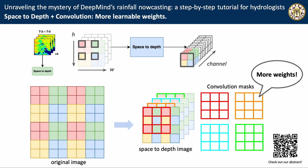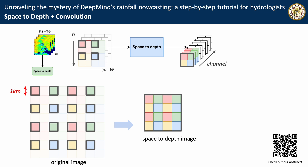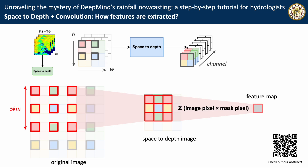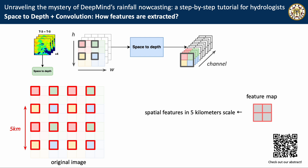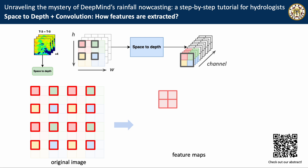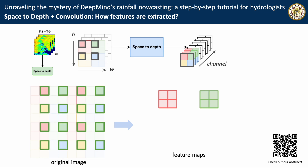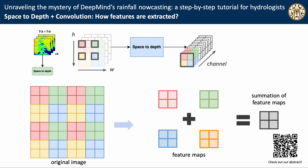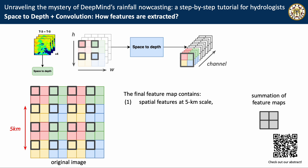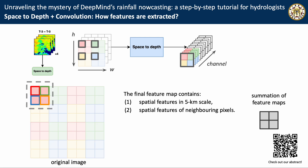Another advantage relates to spatial resolution. When doing convolution on a space-to-depth image, we are actually extracting sparse spatial features at a scale of 5. Repeating this step, we get a map with spatial features at scale 5. The same operation is replicated on every channel of the space-to-depth image, and then we get more feature maps. Summing up these feature maps gives one final feature map. This final feature map contains spatial features at the 5 km scale and spatial features of neighboring pixels.